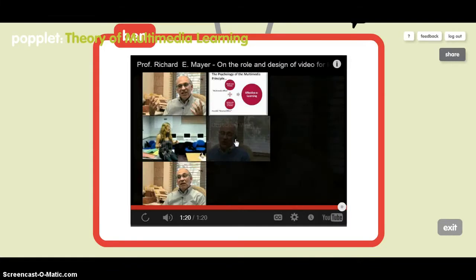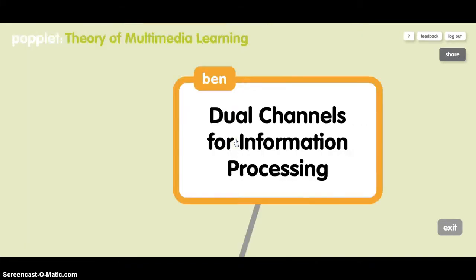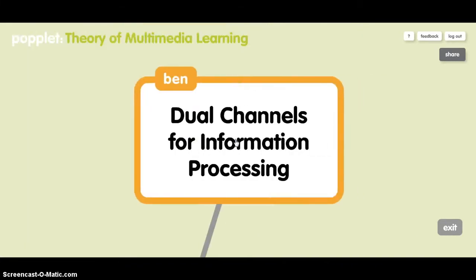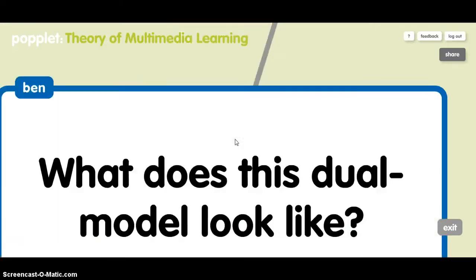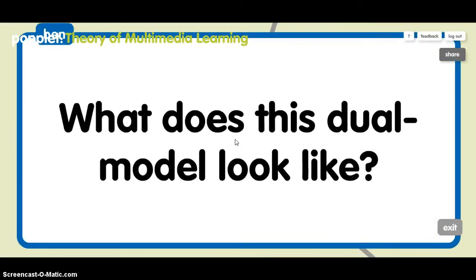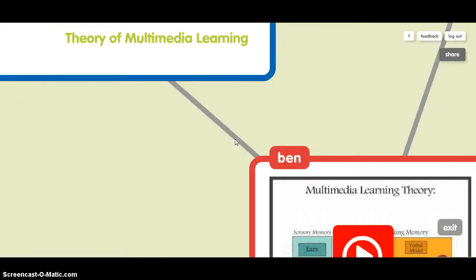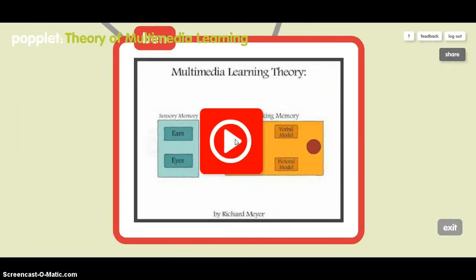So what does Mayer say about how the human mind works? It uses dual channels for information processing — one is auditory and the other is visual. Let's take a look at this short video about the multimedia learning theory.